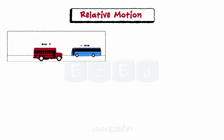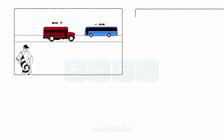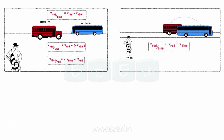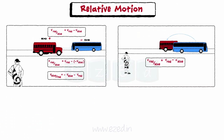From the given example of relative motion, we can say that relative motion is the calculation of the motion of an object with regard to some other moving object.